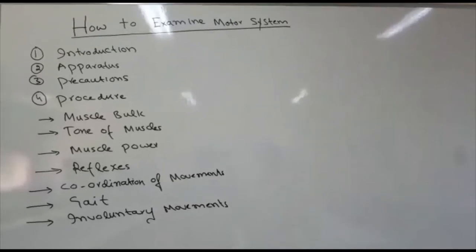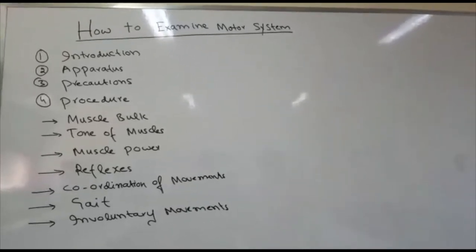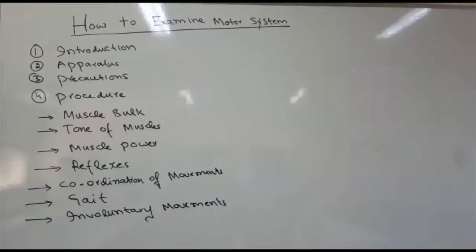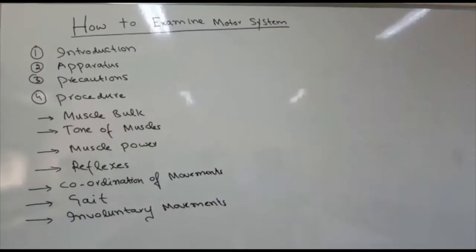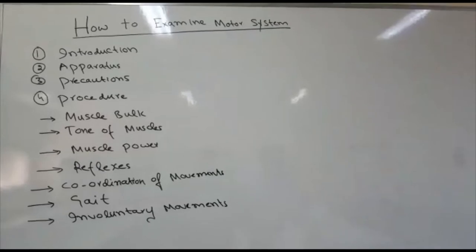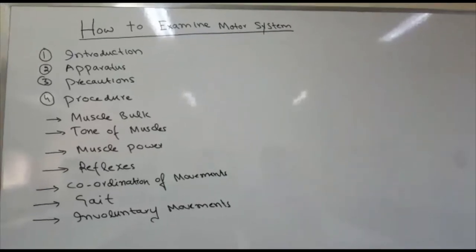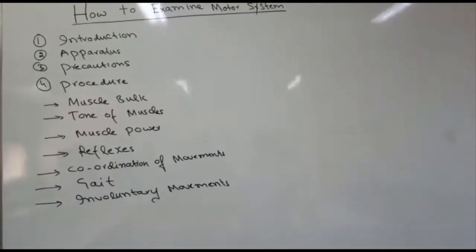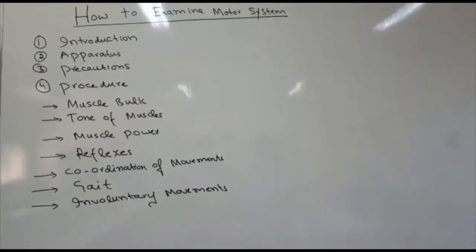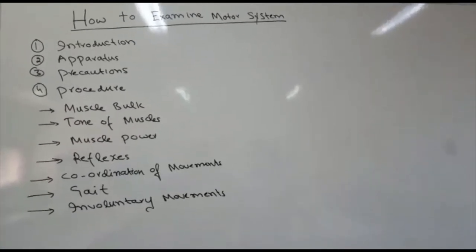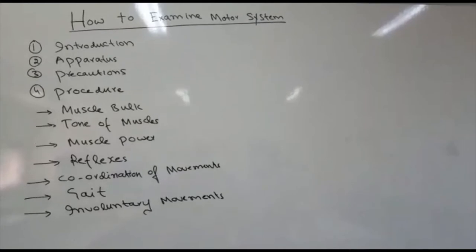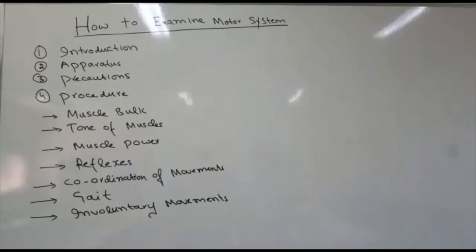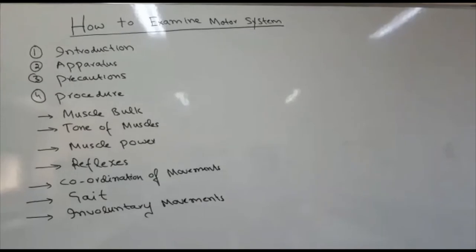For this practical, we need apparatus like a hammer, measuring tape, and card. Precautions include: there should be no inflammation of the area to be examined, exclude any joint disease, always compare both sides, the subject should be relaxed, and the environment should be warm and comfortable.